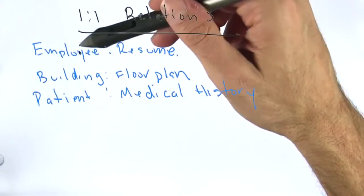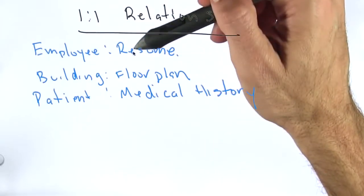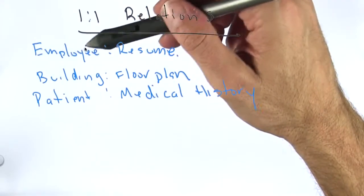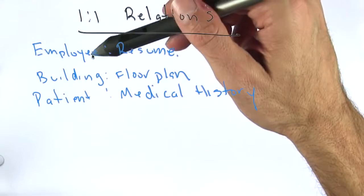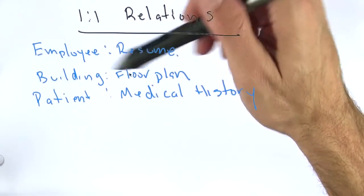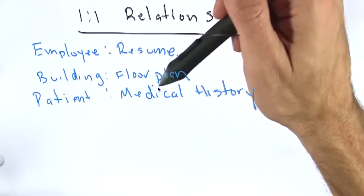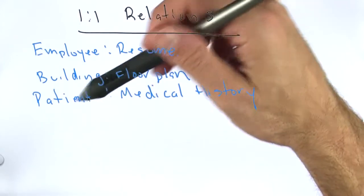So, for example, an employee has a resume. There's one employee has one resume, one resume has one employee. A building has a floor plan. A floor plan has a building. A patient has a medical history, and the medical history corresponds to the patient.